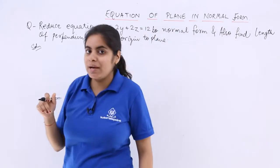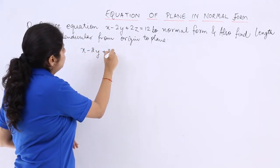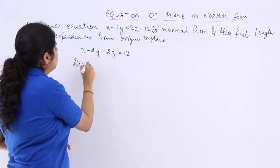So I have x minus 2y plus 2z equals 12. Now what do I have to do? Divide throughout.